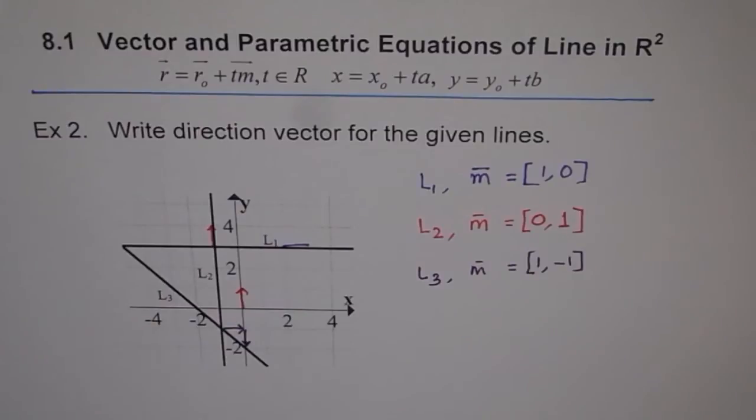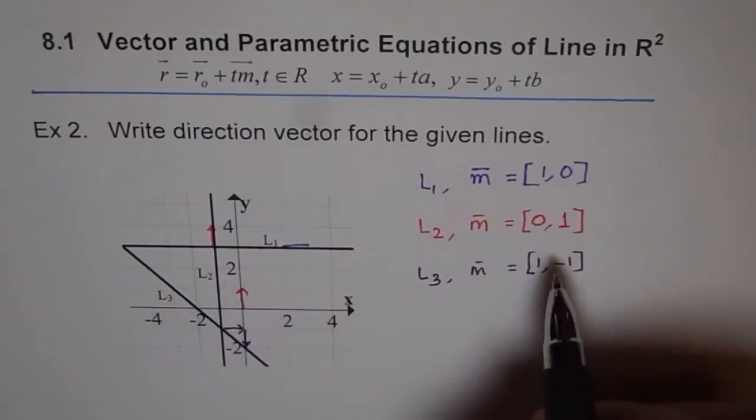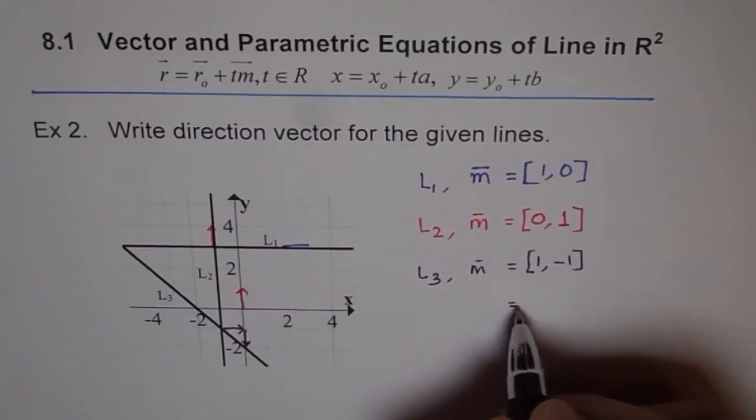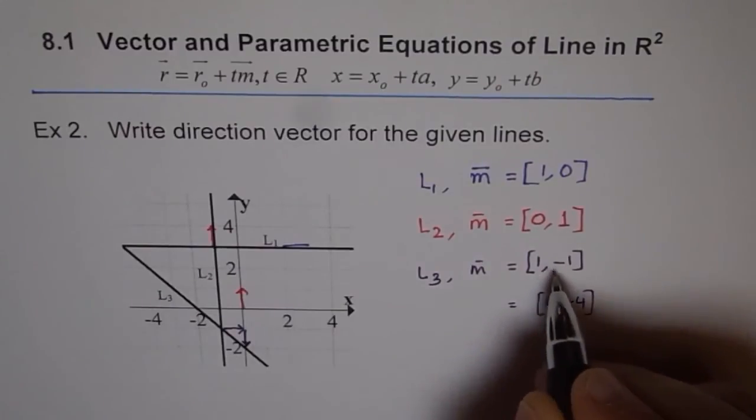So by now, I hope you understand a direction vector is represented at the origin. The line could be anywhere. And the tail of that is put at the origin and head is put at the direction number. And this direction vector can be scaled. This vector, for example, I could write this vector as also [4, -4]. That is same as this.